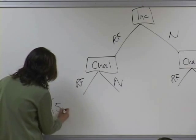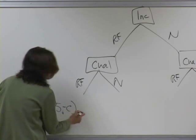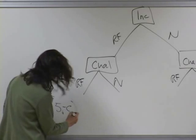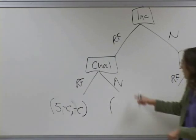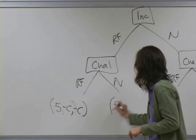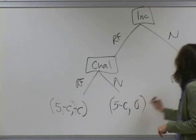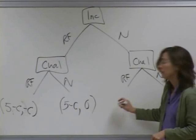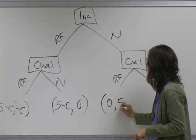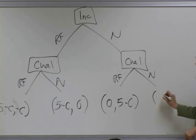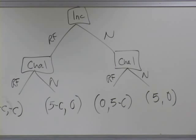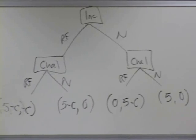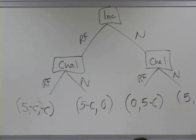With those assumptions, we can fill in payoffs. The incumbent's payoff where both raise funds is 5 minus c; the challenger's is negative c. Over at the next node, incumbent's payoff is 5 minus c, challenger's is zero. Where the challenger wins: incumbent gets zero, challenger gets 5 minus c. And at the last node: incumbent gets 5, challenger gets zero. These are the payoffs — a game with some variables and some numbers.